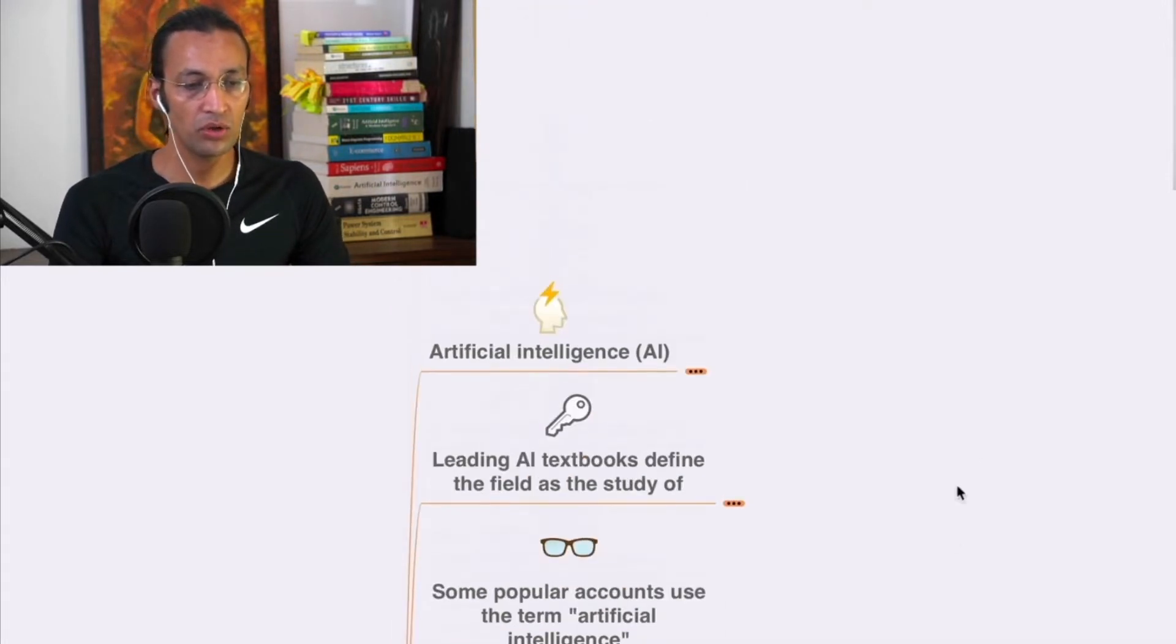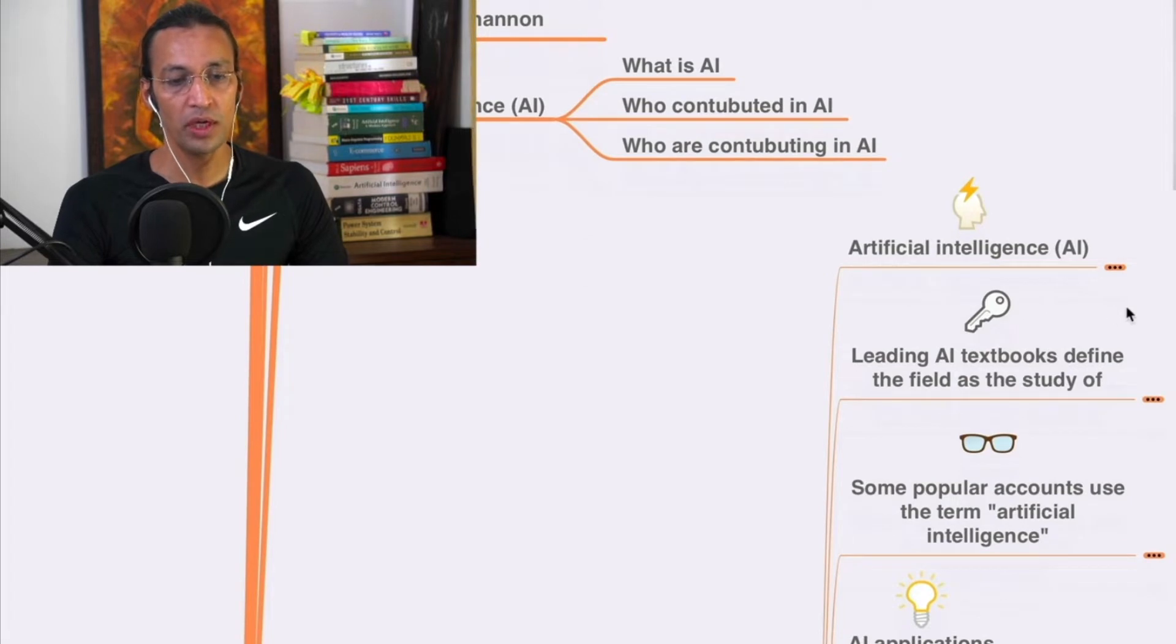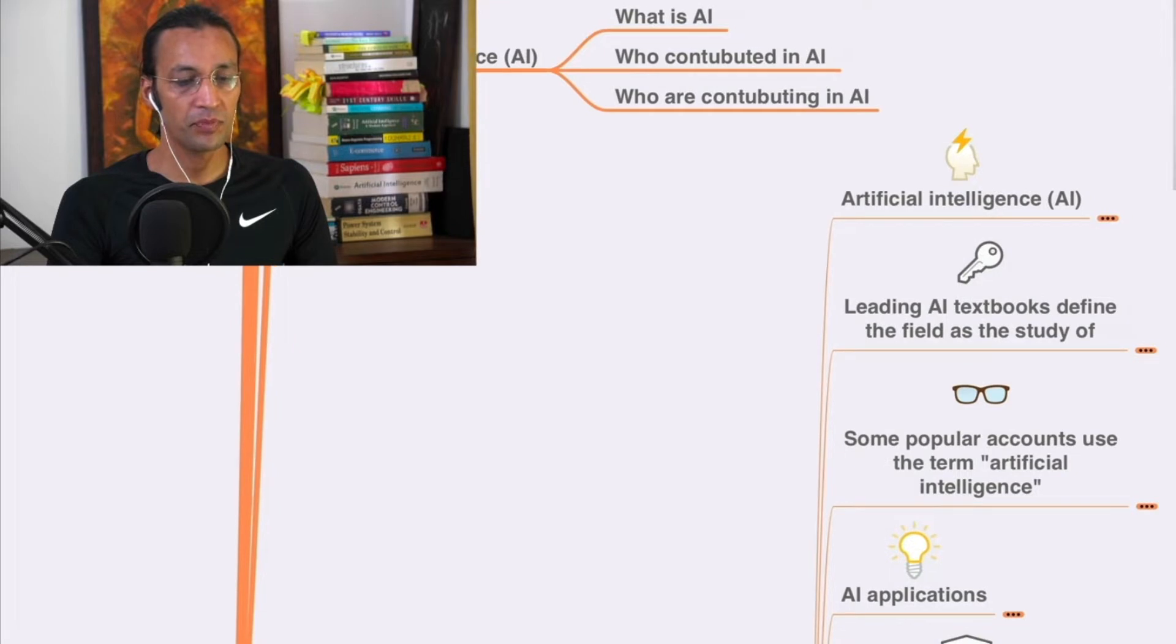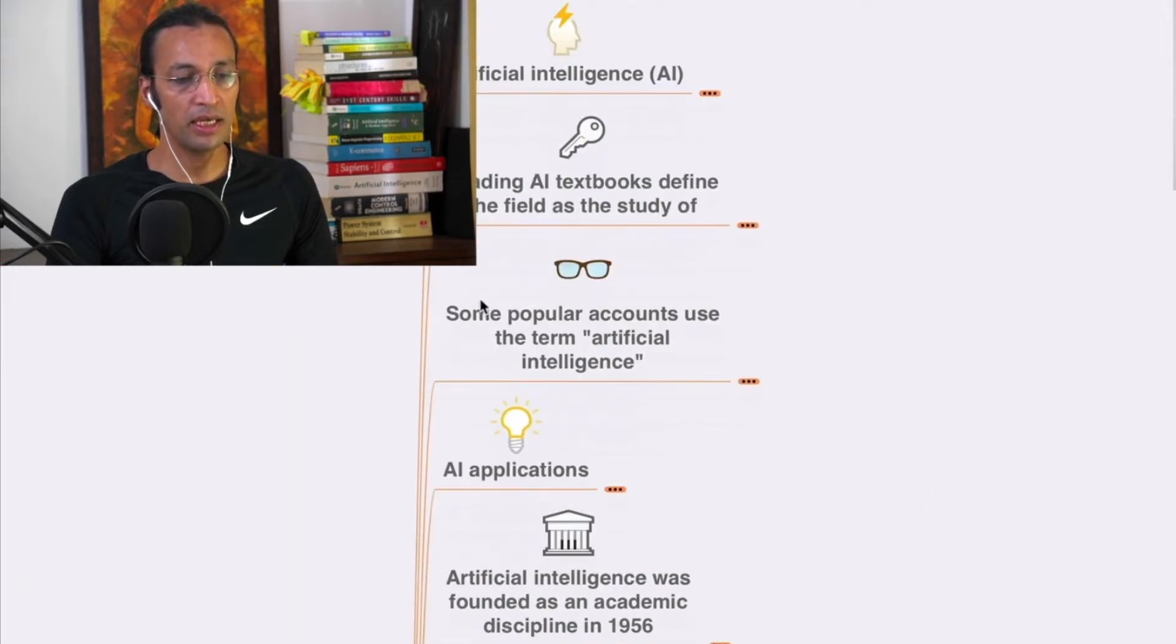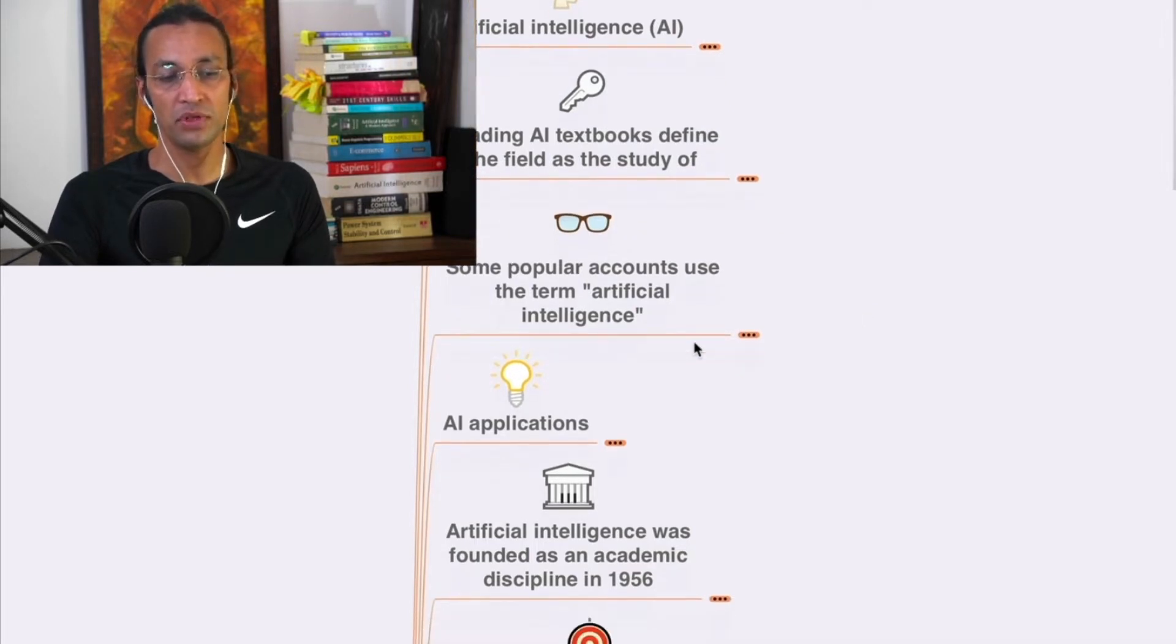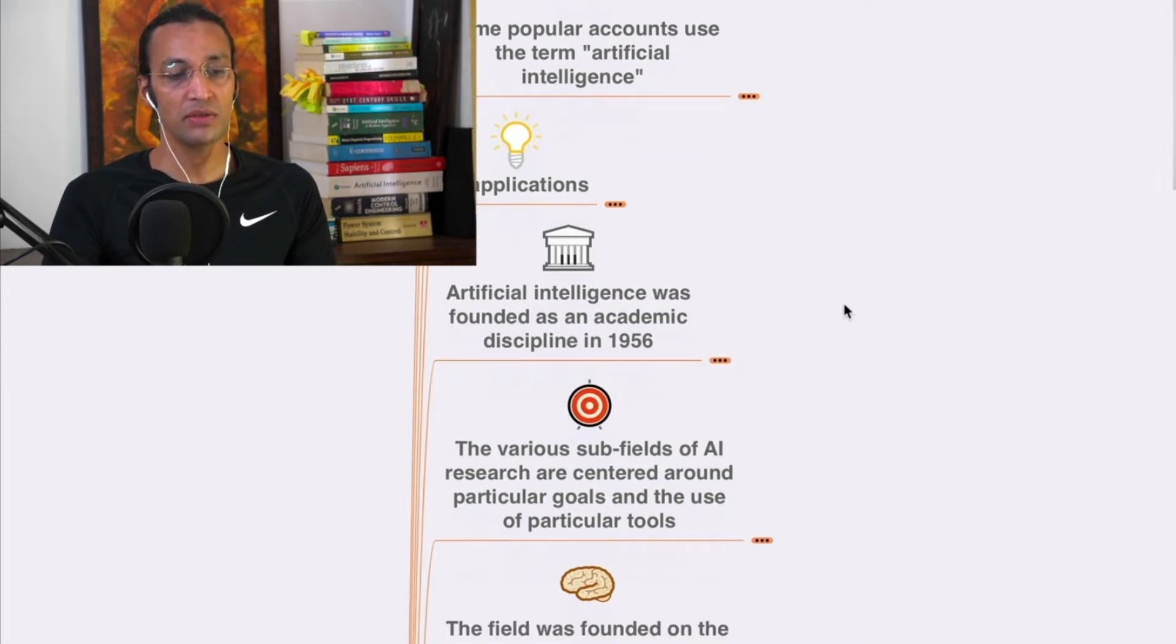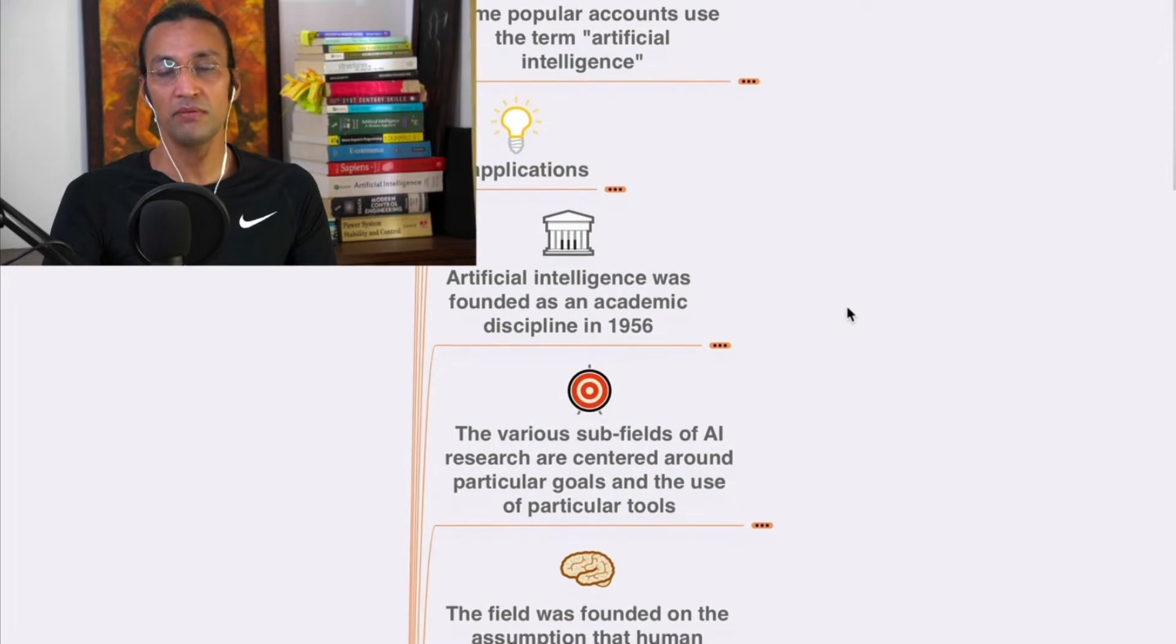We are going to study everything. We'll go through what is AI, the definition of AI through leading textbooks, some popular accounts that use the term artificial intelligence, AI applications, and how artificial intelligence was founded as an academic discipline in 1956.